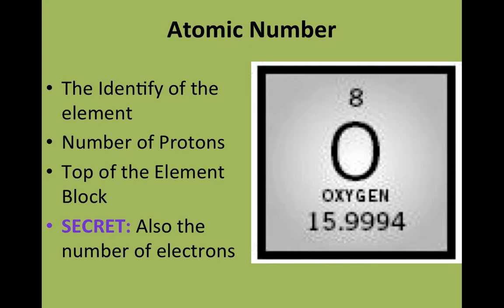Now, there is a secret. If this atom is neutral, then it would also represent the same number of electrons. So today, for our practice, we're going to assume that this element is neutral. So, therefore, it's going to have 8 protons, but secret, 8 electrons as well.